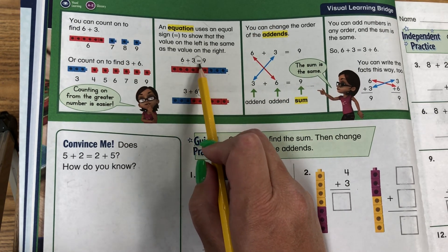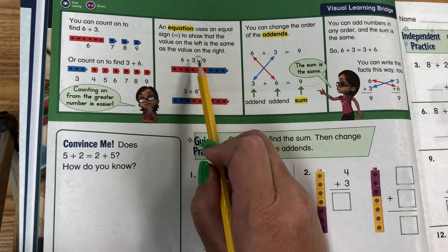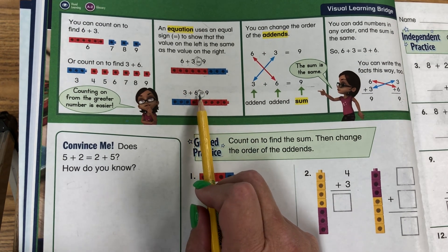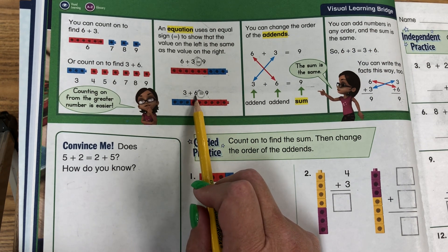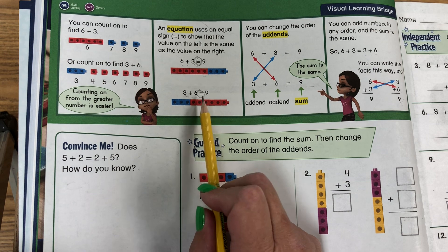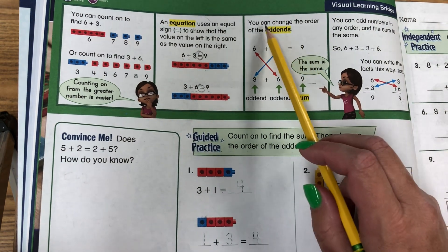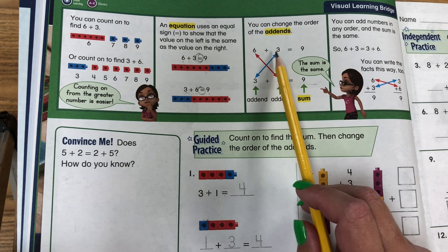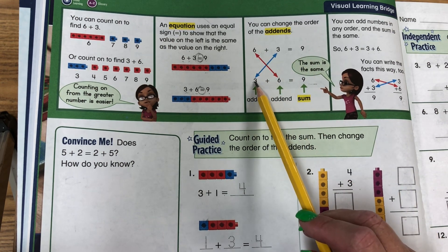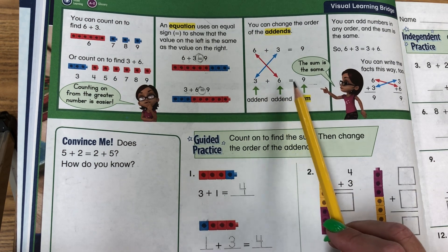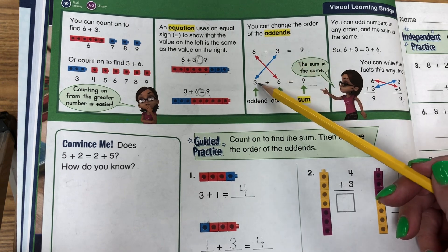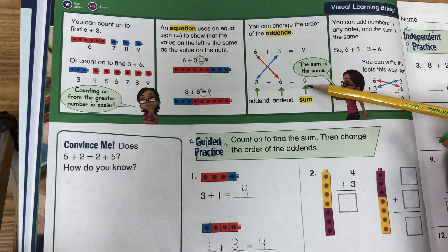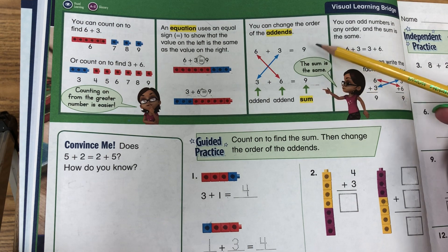6 plus 3 equals 9. The equal sign shows it's an equation. 3 plus 6 equals 9 — 3 plus 6 is the same as 9. That is an equation. You can change the order of the addends. 6 plus 3 equals 9, and it can be in a different order: 3 plus 6 equals 9. They changed where the 3 and the 6 are, but they have the same sum. 9, the answer, is called the sum, and it's the same on both problems.